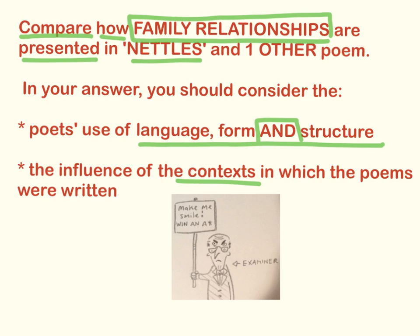Through the miracle of modern technology, I've highlighted the key words. Compare is highlighted because this is a comparative essay — if I'm just looking at one poem, my grade is going to go into free fall. I need to access the higher grades by looking at two poems together. How refers to the poetic techniques employed by the poet. The key phrase is the theme explored in this essay — in this case, family relationships. I've highlighted 'presented' because: are family relationships presented as harmonious, fractious or troubled? Presented positively or negatively?